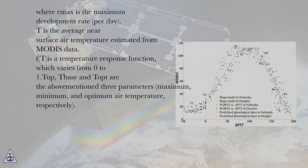Where rmax is the maximum development rate per day, T is the average near surface air temperature estimated from MODIS data, fT is a temperature response function which varies from 0 to 1, and topt, tbase and tmax are the abovementioned three parameters (maximum, minimum, and optimum air temperature, respectively).